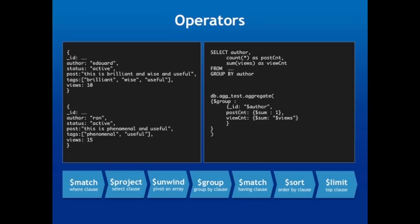If I was to write this in SQL, it would be what's on the top of the second column here — a simple select, count, sum, from, with a group by author. With the aggregation framework, it's going to look very similar. It's going to be a call to the aggregate function, saying: group by author, sum every document you find — sum one — and sum the views and aggregate this into view count. This is to show you that if you come from an SQL-like background, the aggregation framework is something you should be able to learn in 10 to 15 minutes, because there's a very similar mindset.